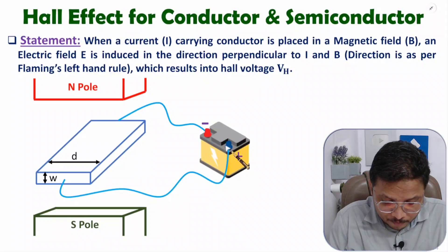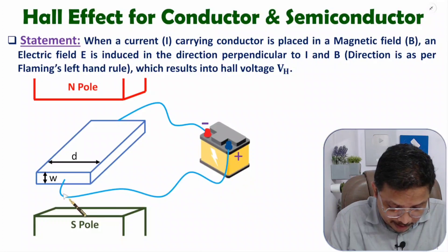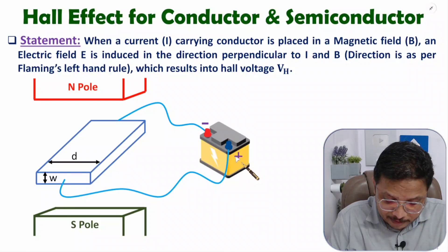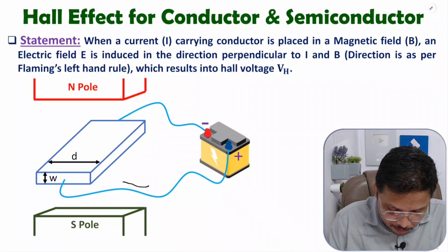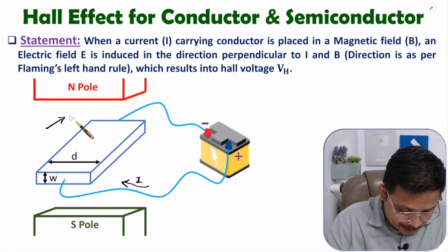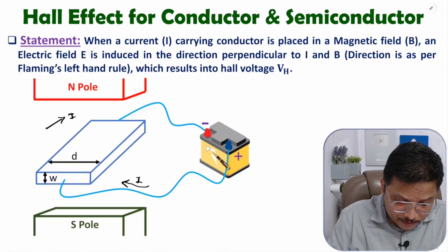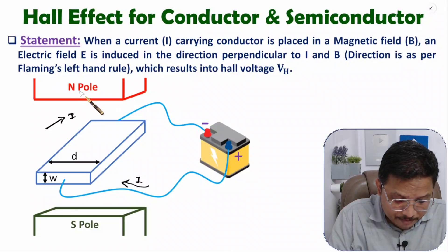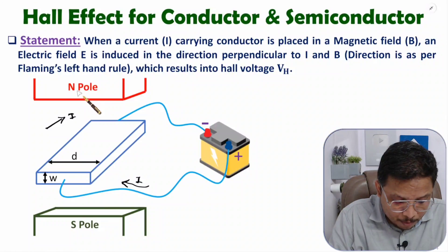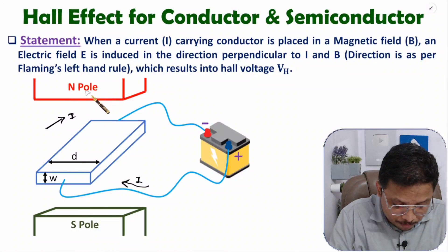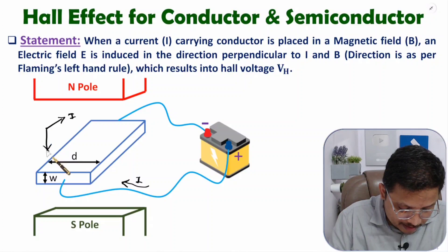To pass current through this material, we connect a battery — the positive terminal here and the negative terminal here. With this battery we are passing current through the material. As per the positive terminal, current will flow in this direction through the material. We are placing this material inside a magnetic field, generated by a magnet with north pole here and south pole here, so the magnetic field direction goes from north pole to south pole — in this direction.